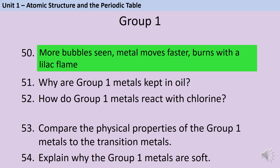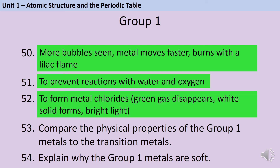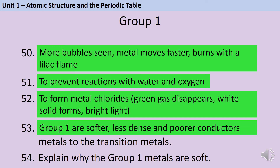The Group 1 metals are kept in oil to prevent them from reacting with water and oxygen in the atmosphere. When they react with chlorine they produce metal chlorides — white, salty-looking substances — and the green chlorine gas will disappear, often accompanied by a very bright white light. Group 1 metals are much softer, less dense, and poorer electrical conductors than the transition metals. They are soft because of their metallic bonding: each atom only contributes one electron rather than the two or three seen in transition metals, and each metal ion only carries a single +1 charge rather than a 2+ or 3+ charge.